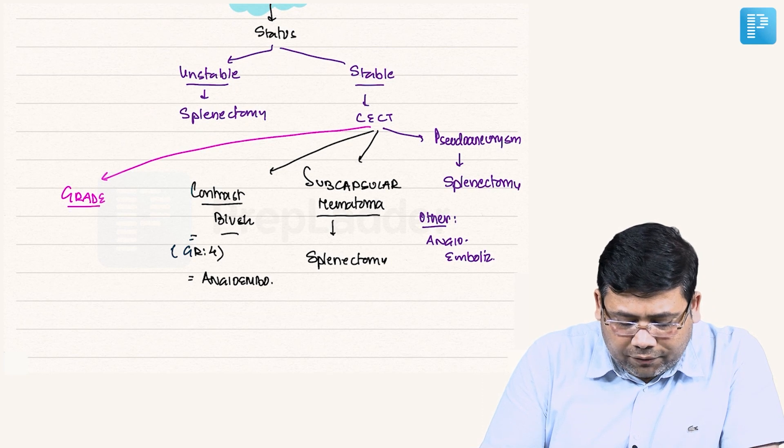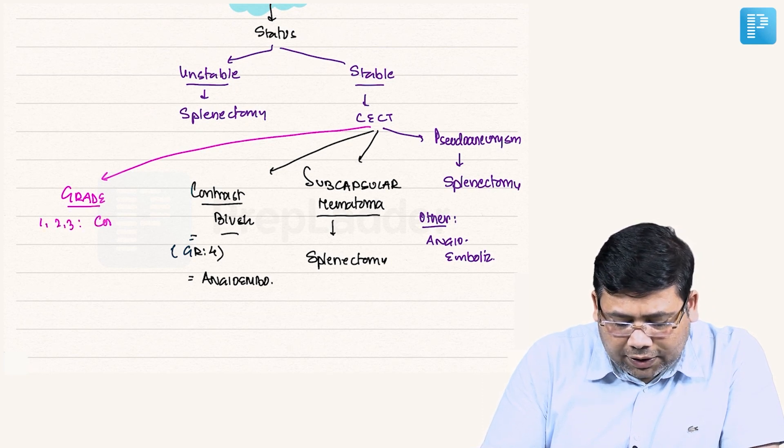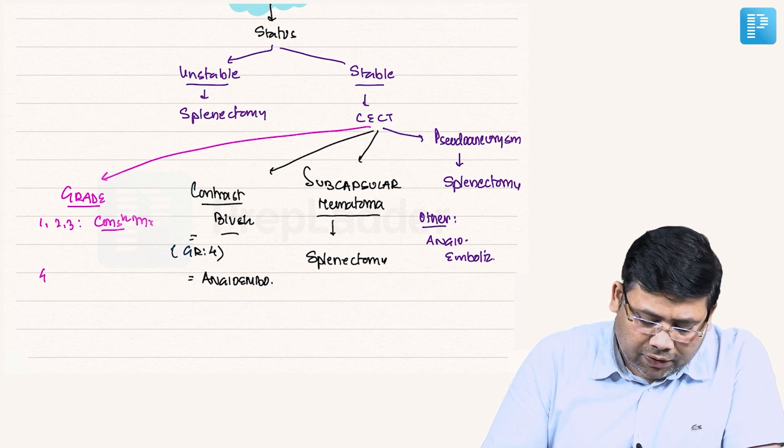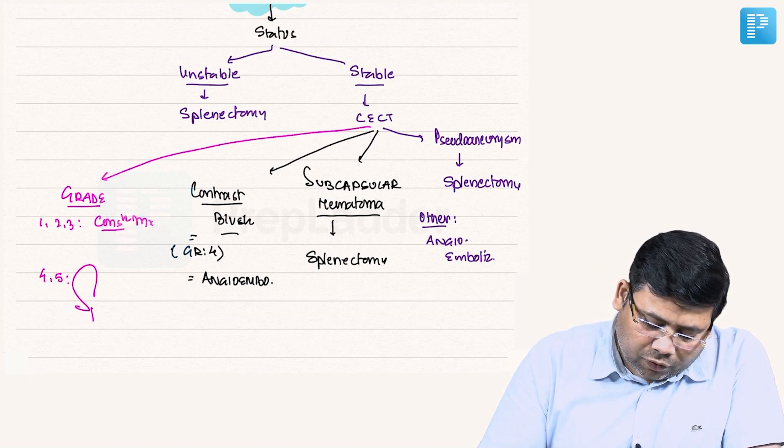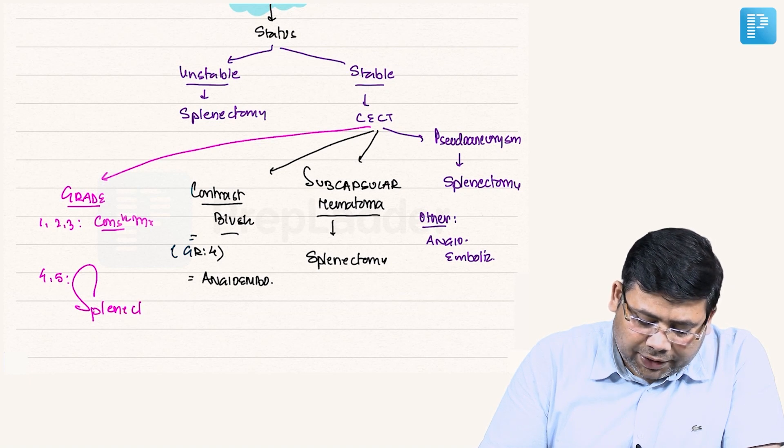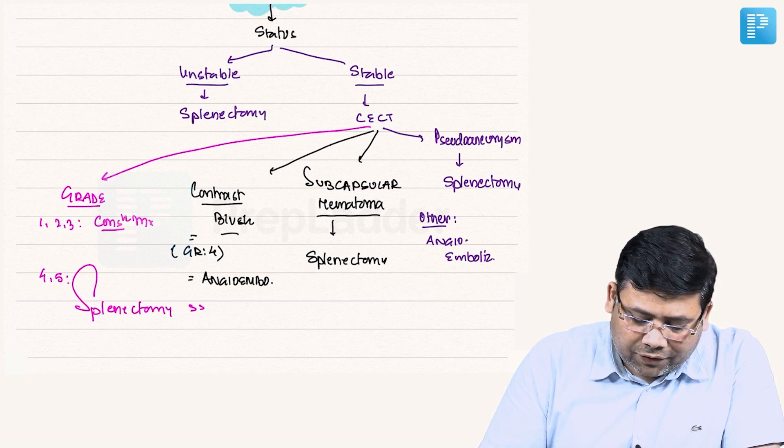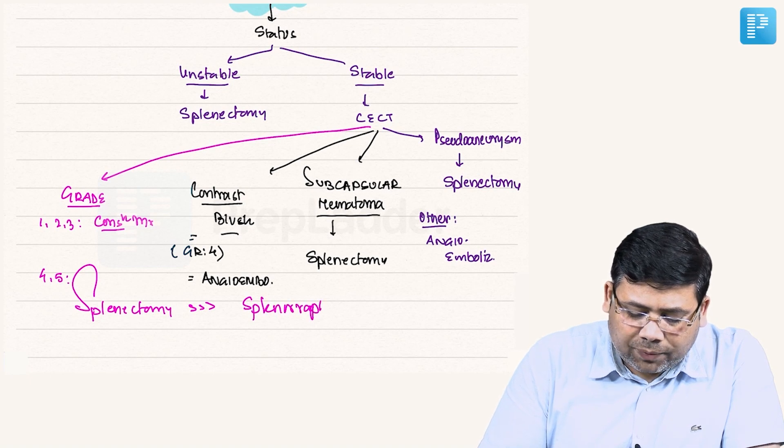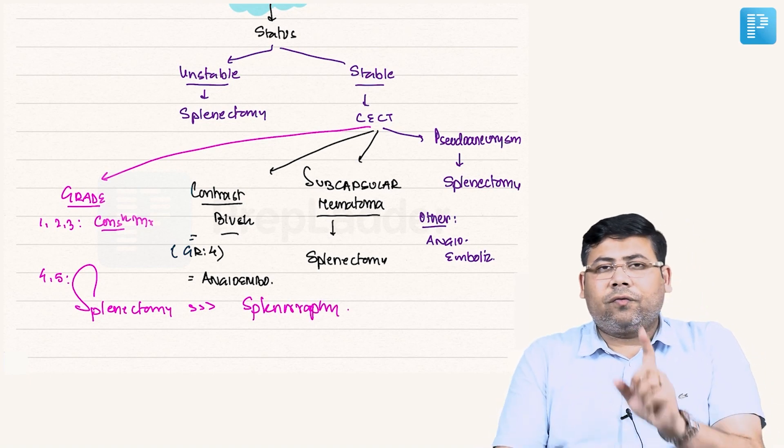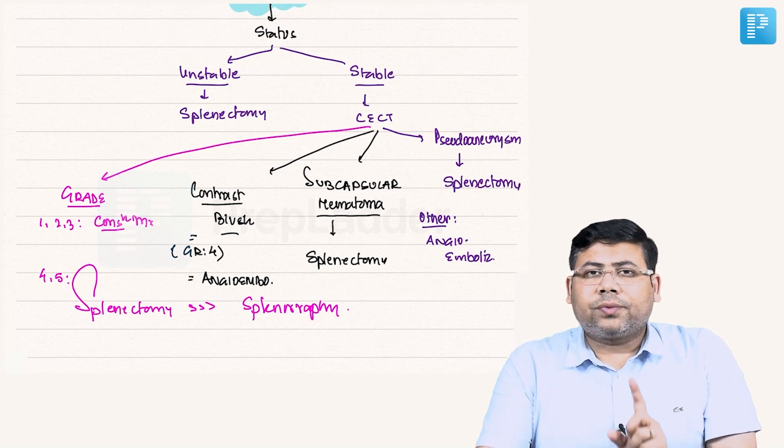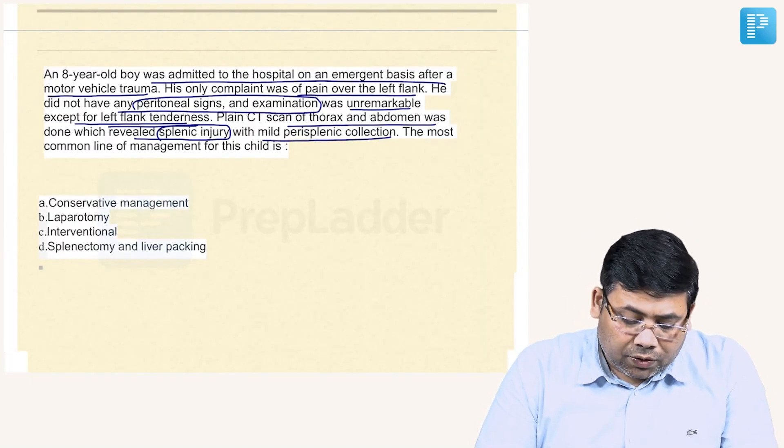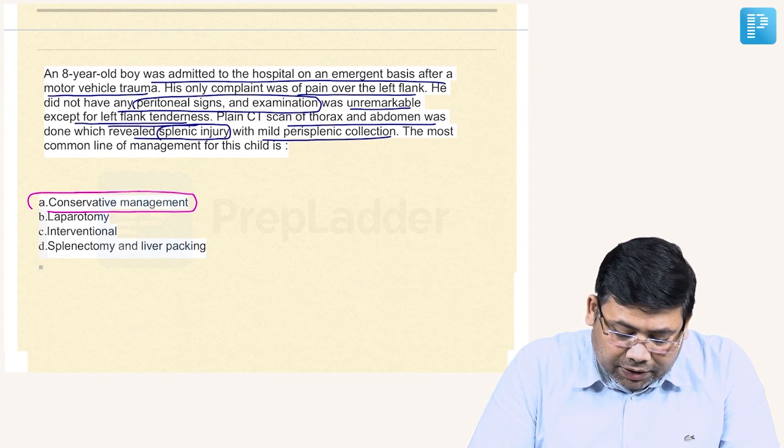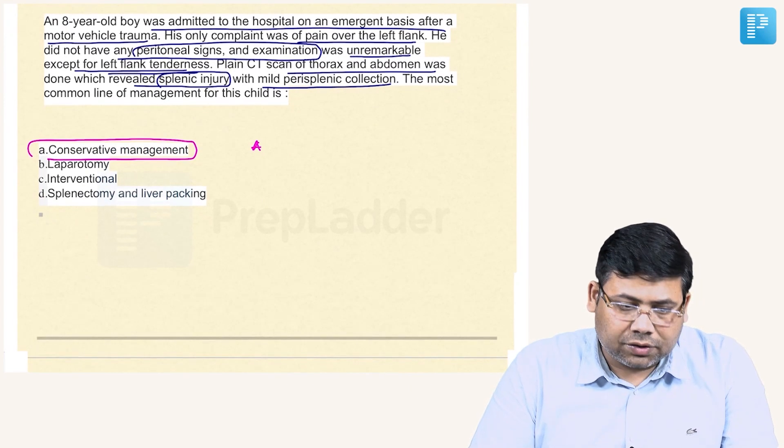And the last is the grades. Grade 1, grade 2, grade 3: we go for conservative management, that is observation. Grade 4 and 5: we always prefer to go for splenectomy over splenorrhaphy. It is only kids who are having more than 50% of the functional spleen where we go for splenorrhaphy. Otherwise, this option is not utilized much. So the answer for this: I will go for conservative management, and the answer is A.